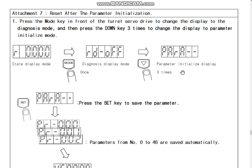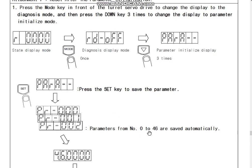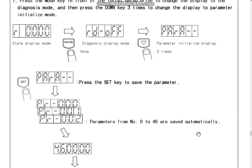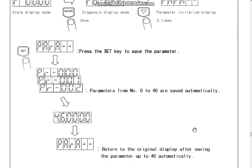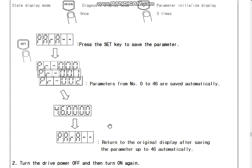Then if you press the SET key, automatically all parameters from 0 to 46 are set to default value and saved automatically, and it returns to the original display after saving.